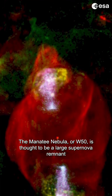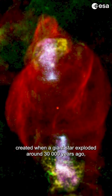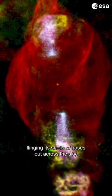The manatee nebula, or W-50, is thought to be a large supernova remnant created when a giant star exploded around 30,000 years ago, flinging its shells of gases out across the sky.